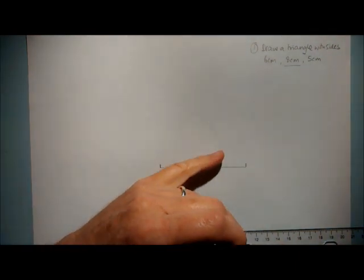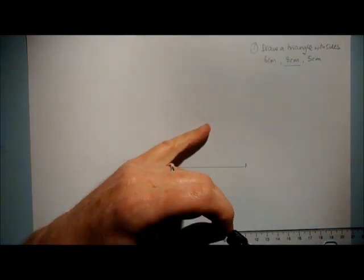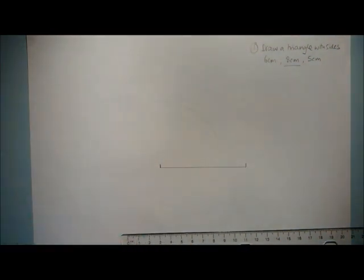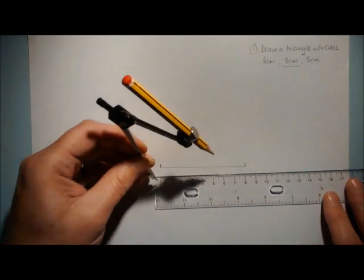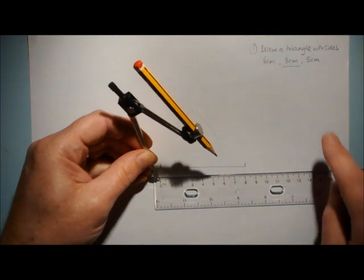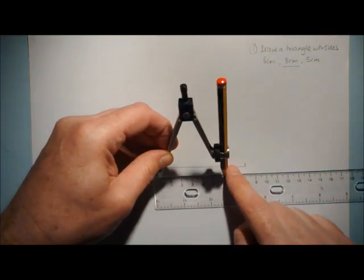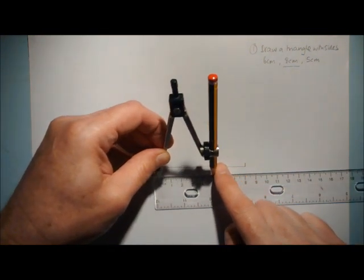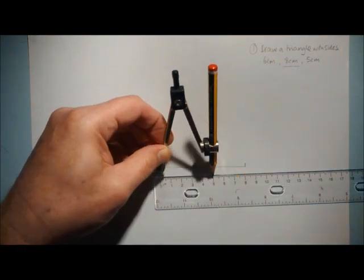So every point on that arc is 6cm away from this point here. Bring this ruler in again. Now we need to measure the 5cm side. So pull that back to 5cm. There we go exactly 5cm.